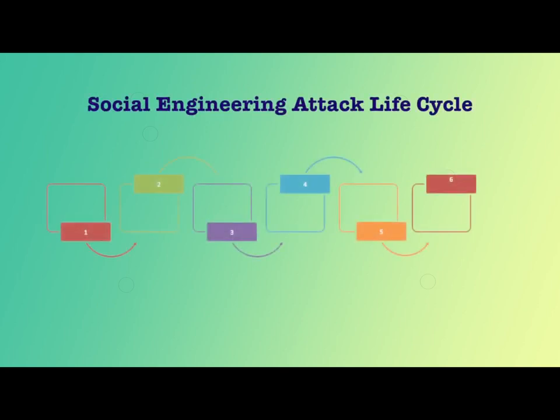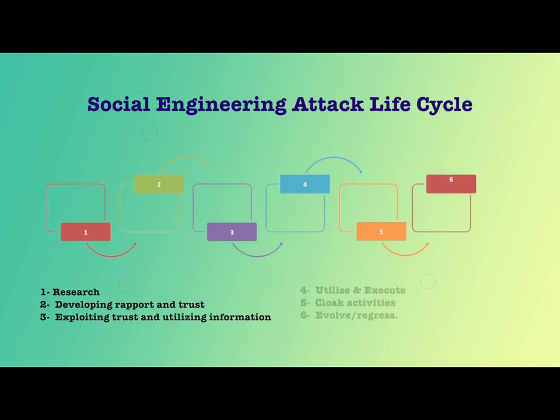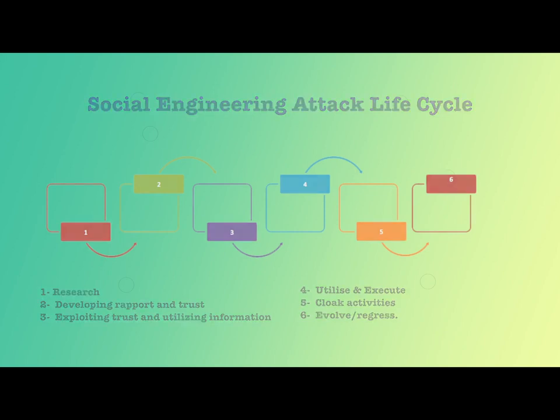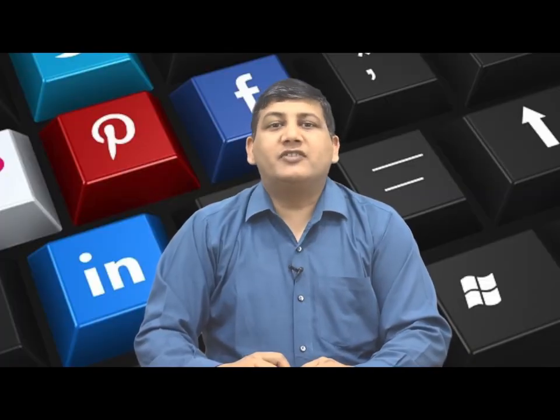A broad view of the social engineering attack life cycle has six phases. They are research, developing rapport and trust, exploiting trust and utilizing information, cloak activities, and evolve or regress. We will now explain each of these steps in detail.